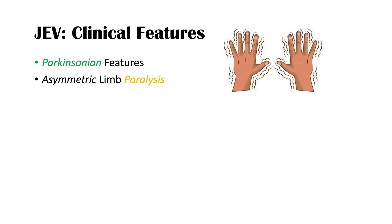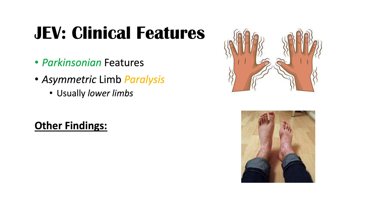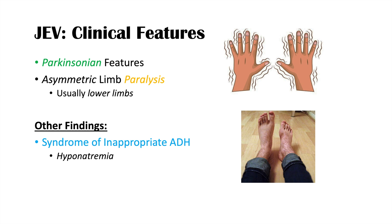Other clinical features include Parkinsonian features such as resting tremors and cogwheel rigidity. Asymmetric limb paralysis can also occur, where one side of the body becomes paralyzed — typically in the lower limbs. Additionally, the syndrome of inappropriate antidiuretic hormone (SIADH) can develop, with inappropriate secretion of ADH leading to fluid retention and hyponatremia, as sodium becomes diluted in the body.